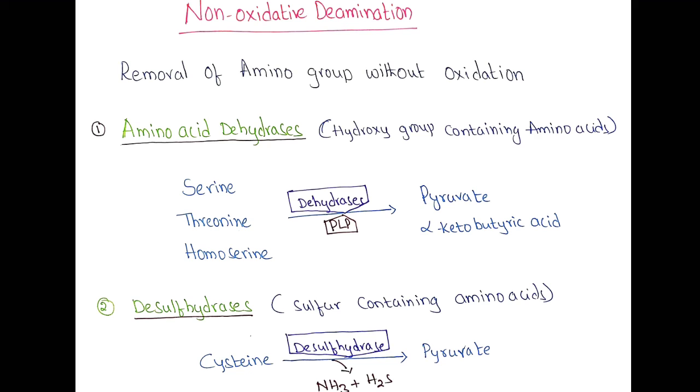Coming to non-oxidative deamination, here the removal of amino group takes place without oxidation, that is no hydrogens are released from the amino acid during the removal of ammonia. Examples are amino acid dehydrogenase. These enzymes act on the hydroxyl group containing amino acids.